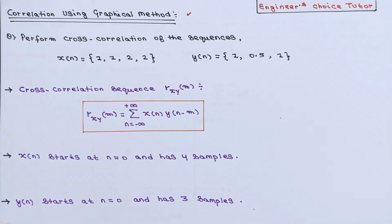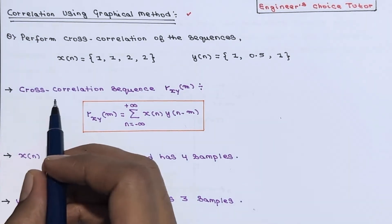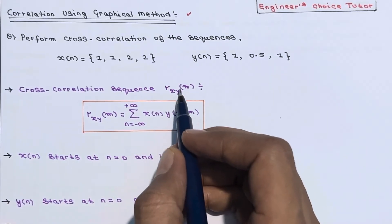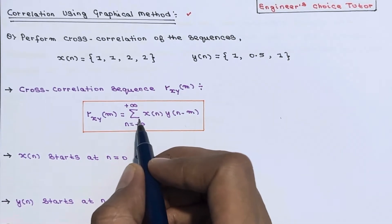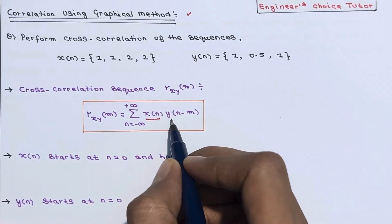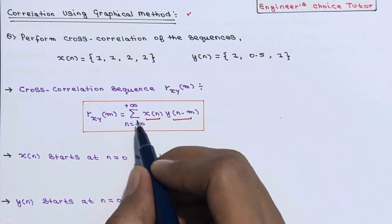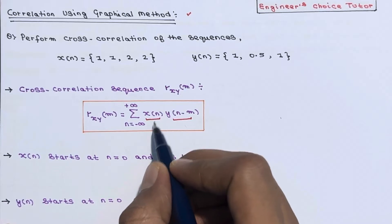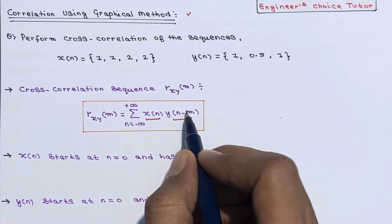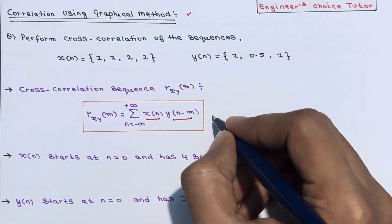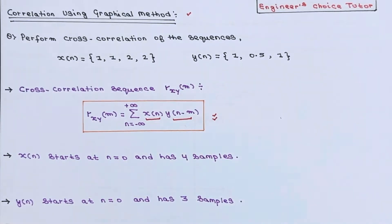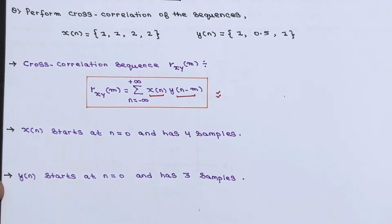We already know the formula for cross correlation. The cross correlation sequence rxy[m] is defined as the summation of x[n] multiplied by y[n - m], where the limit of n ranges from minus infinity to plus infinity. Here x[n] is unshifted and y[n - m] is a shifted version of y[n]. This is the mathematical expression for cross correlation.